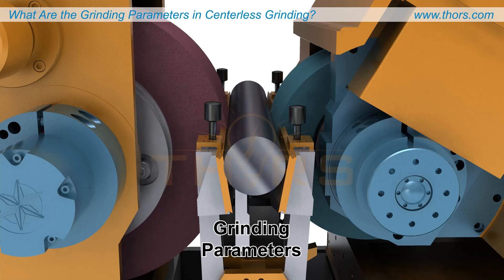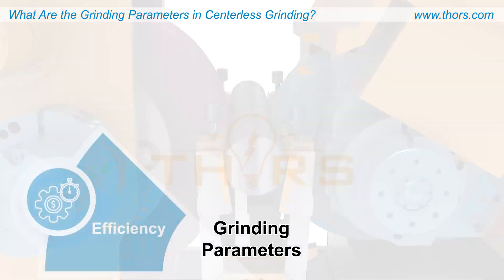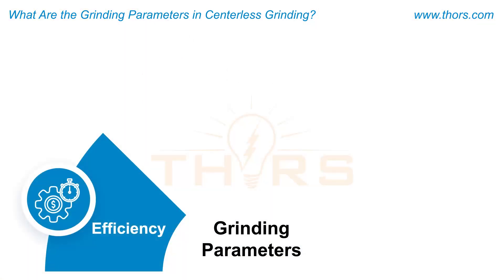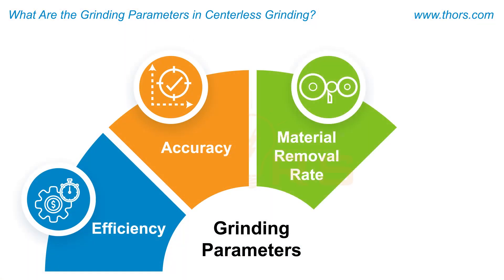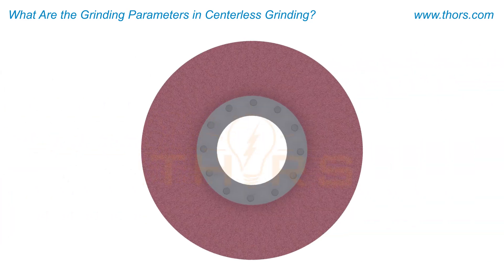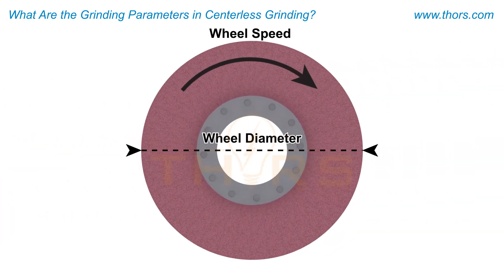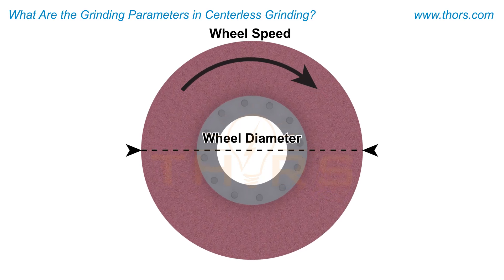Grinding parameters are a set of adjustable variables and conditions within the centerless grinding process that determine efficiency, accuracy, material removal rate, and surface finish. Grinding wheel parameters, such as wheel diameter and wheel speed, define the wheel's operation during the centerless grinding process.